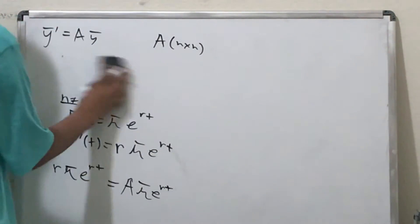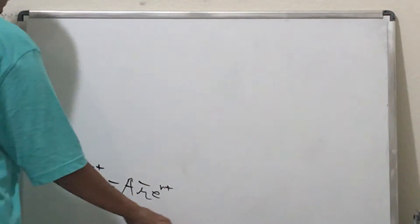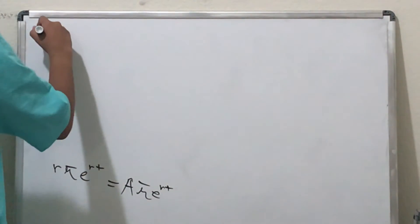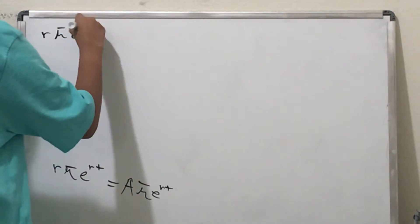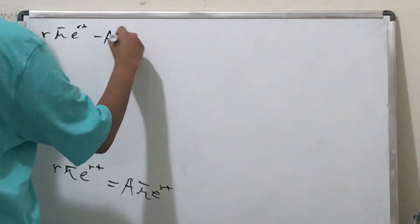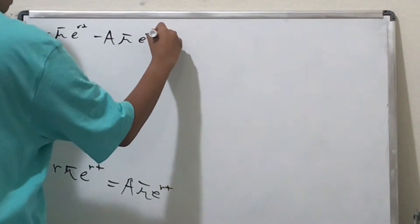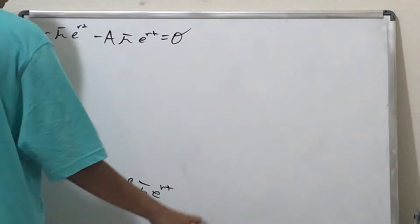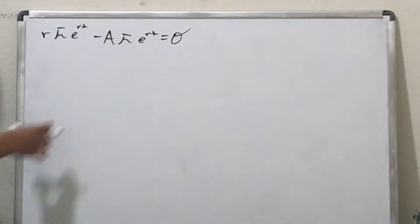Now I'm going to give myself a little bit more room here. Let's bring this over to the other side. So we get rμe^(rt) minus Aμe^(rt) equals the zero vector. The idea here is you have to find constants μ and r.